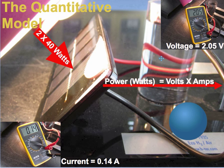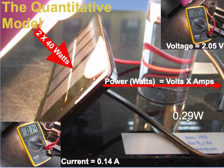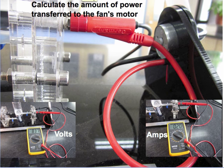So it's just a transfer of energy, and then you have a transformation where light energy becomes electrical energy. To find out how much power actually flows, we can connect a multimeter and get readings for current and voltage, then multiply volts by amps. When we multiply those, we get 0.29 watts, which means we're well on the way to creating a quantitative model for energy flow in the clean energy system.